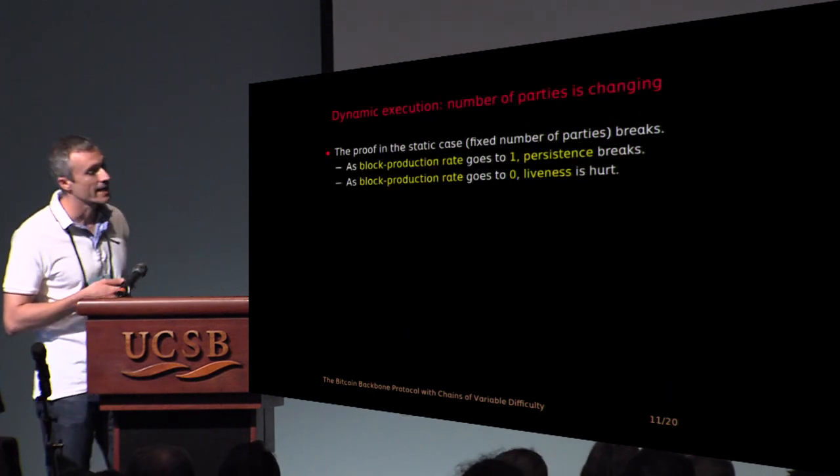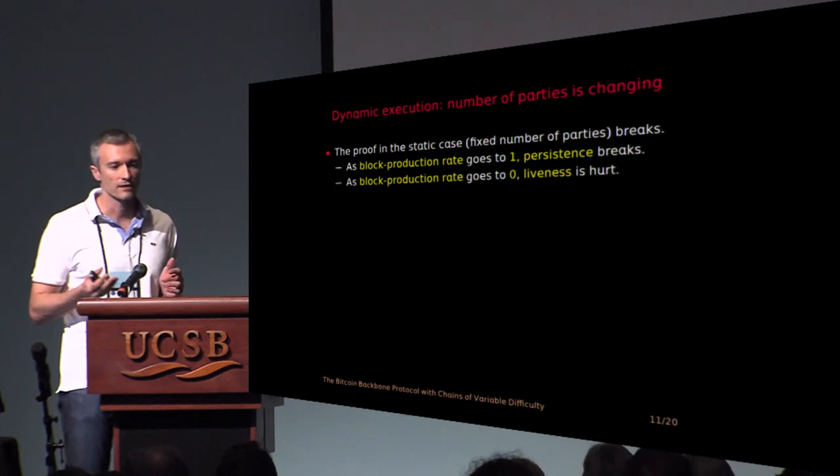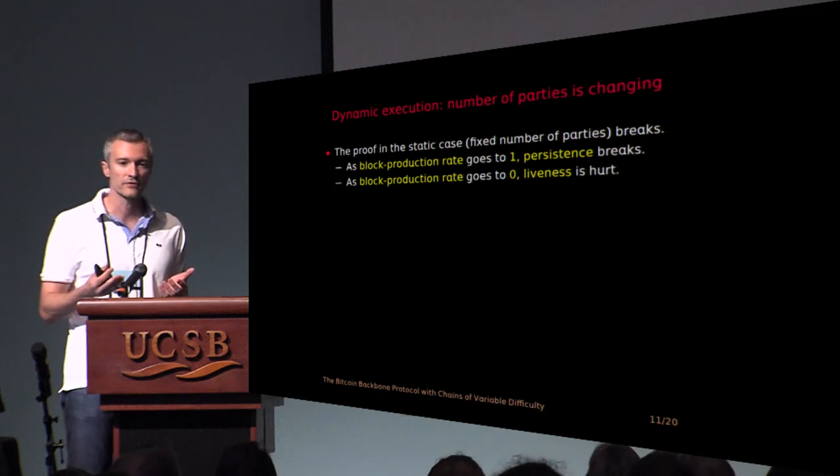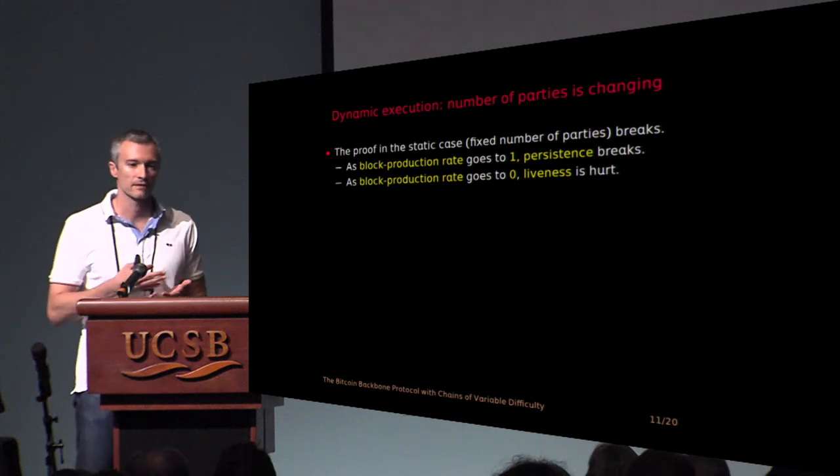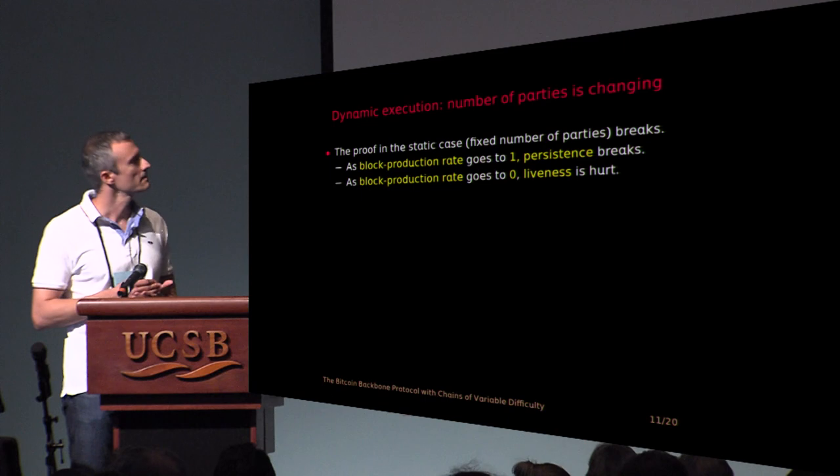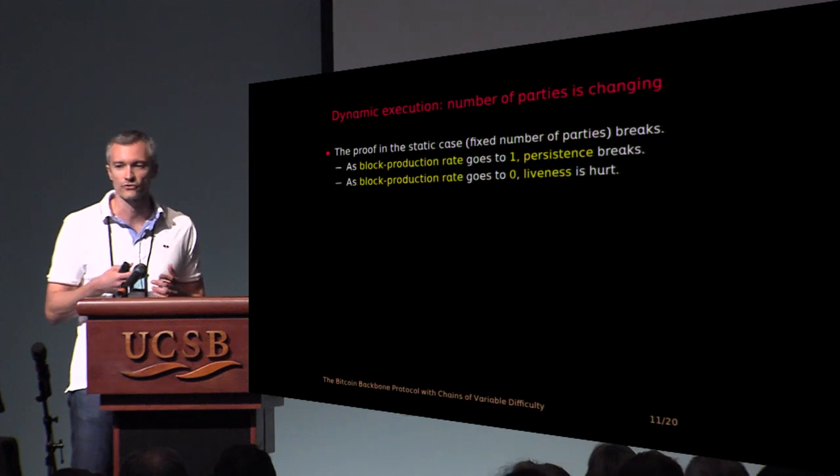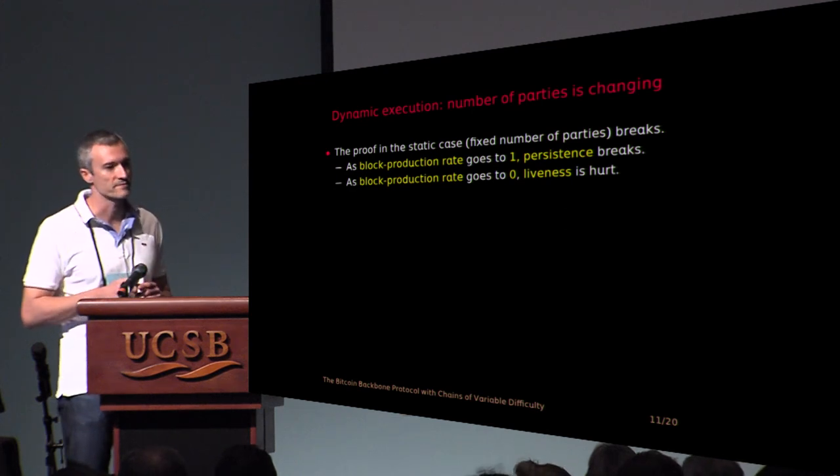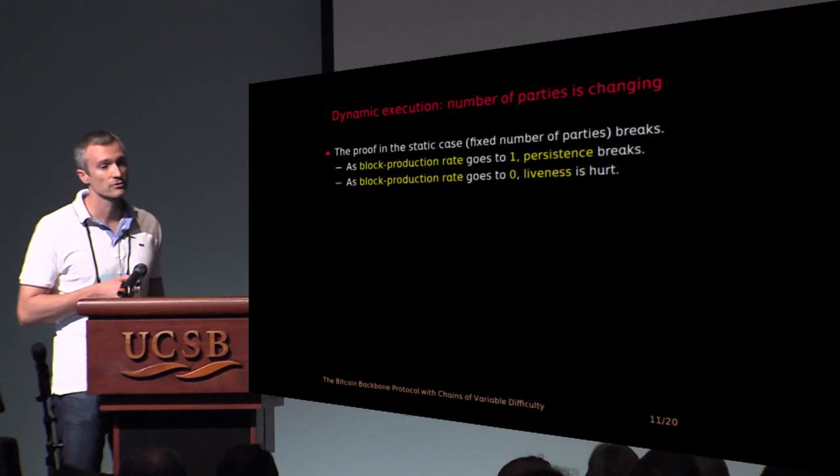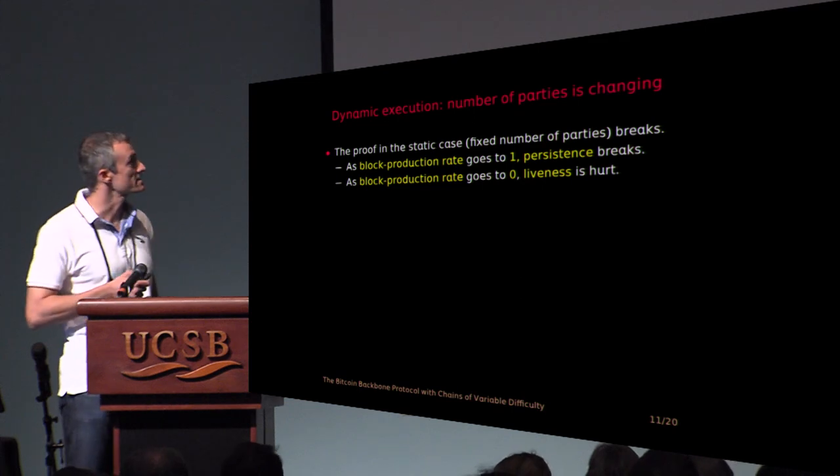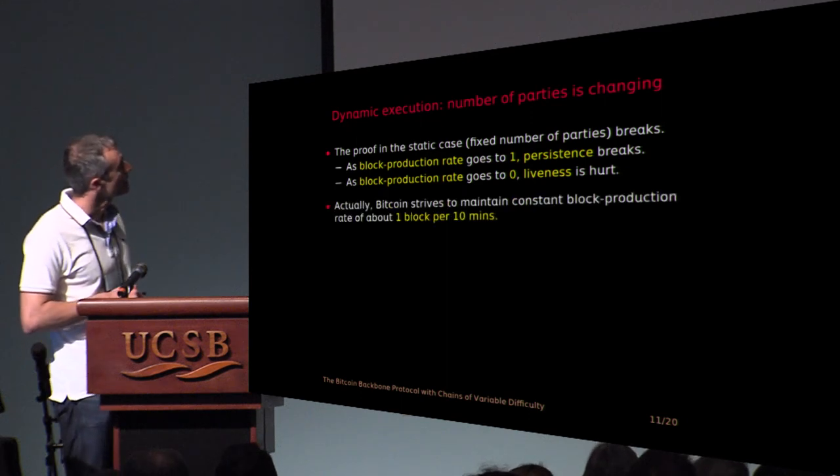However, in the dynamic execution, if you just keep the target fixed and the number of parties starts increasing, then your block production rate is going to get closer to one. The probability of a successful round is going to get closer to one, and persistence breaks, and the common prefix breaks. Well, the proof breaks, but also, if you have a lot of honest parties computing simultaneously solutions on any round, they're going to fork by themselves. And also a problem is block production rate drops to zero, because then liveness is hurt and no new blocks get generated.